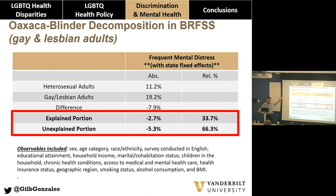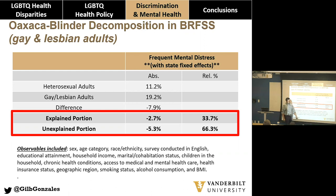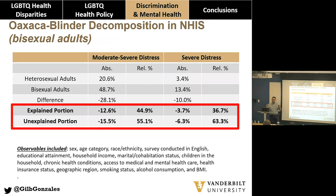In both datasets, sexual minorities are generally younger, have higher educational attainment, lower household incomes, and are less likely to be married or have a child in the household — consistent across a variety of datasets. Here are results from the Oaxaca-Blinder decomposition: about 20% of heterosexual adults have moderate to severe psychological distress, and 30% of gay and lesbian adults have moderate to severe psychological distress, a 10 percentage-point disparity. After running decomposition, about half is explained and about 48% is unexplained by observables.